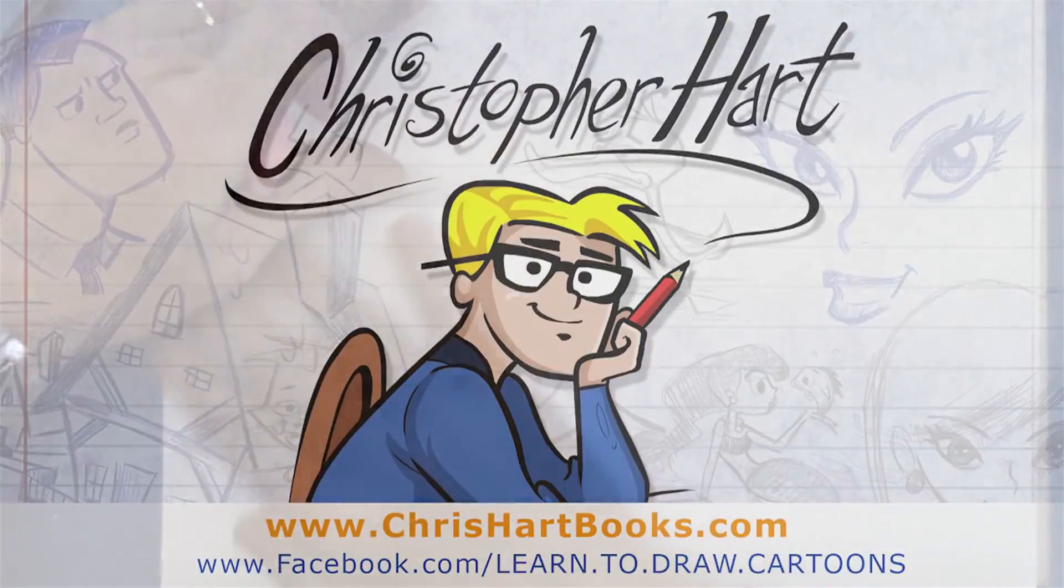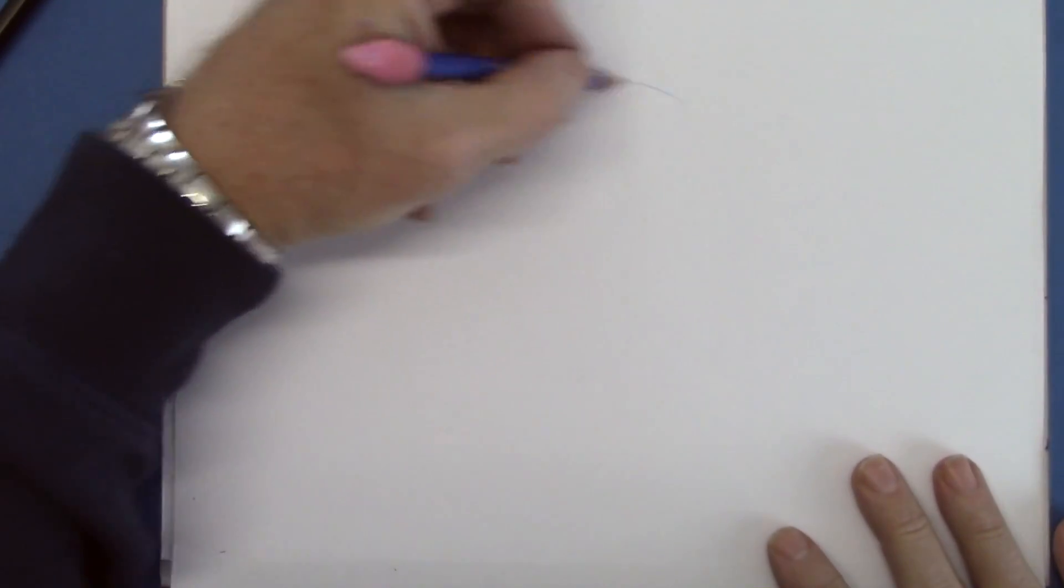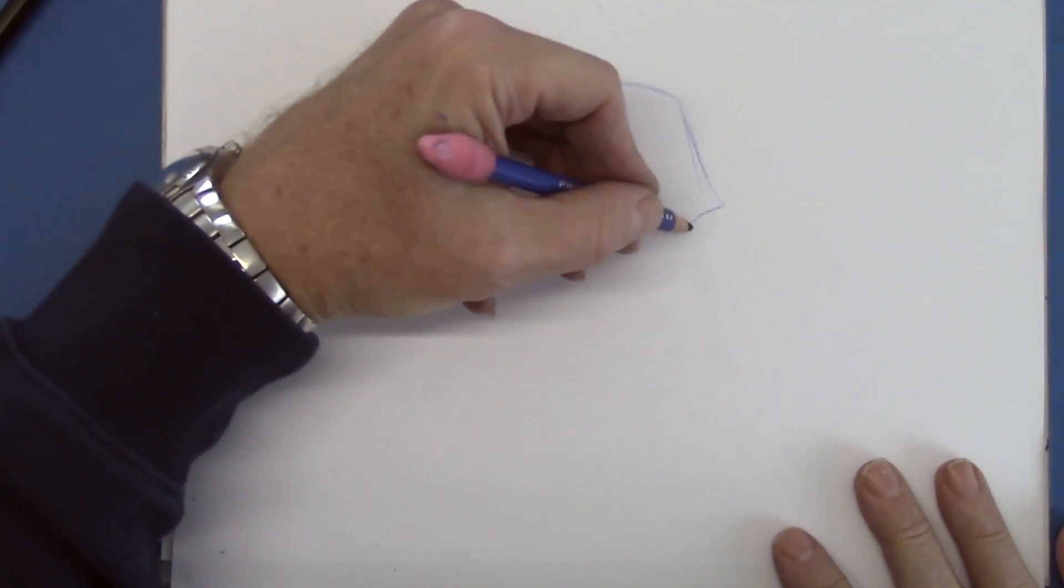Hi, my name is Christopher Hart. I'm a cartoonist, author of many books on how to draw cartoons. Today I can show you how to draw a comic book bad guy.